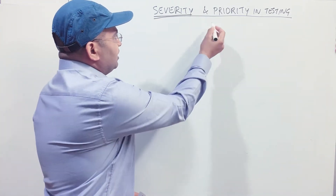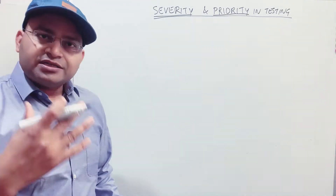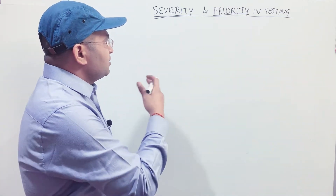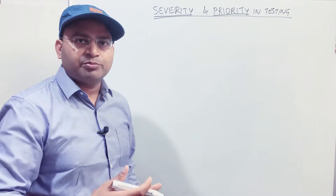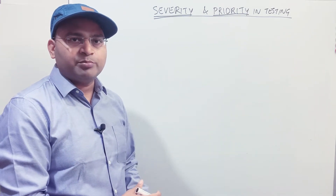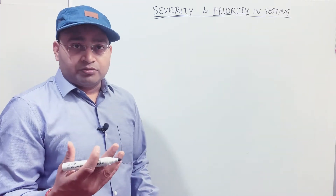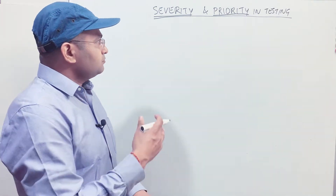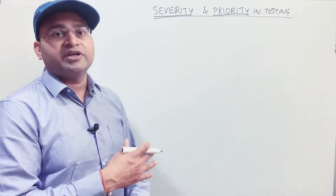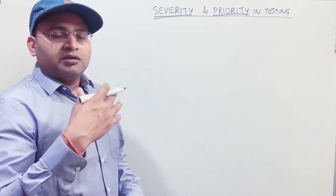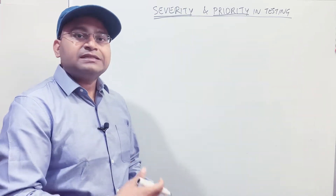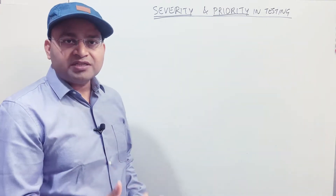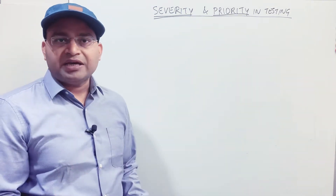Let's see what exactly severity and priority are. Priority is something related to time — what is the priority of things? Severity, in general English, is how severe something is. If you have a pain in your hand, how severe is that pain? If it is very minimal pain, then is it a high priority to visit an emergency department? No. But if the pain is very severe — if you have broken your hand — the severity is very high, and yes, it is a high priority to visit the emergency department. This is a general scenario from day-to-day life, and the same concept can be applied to software defects.